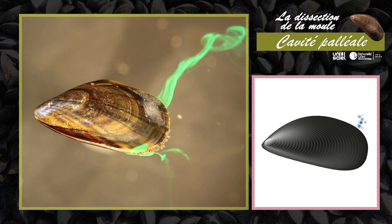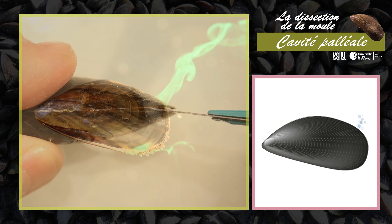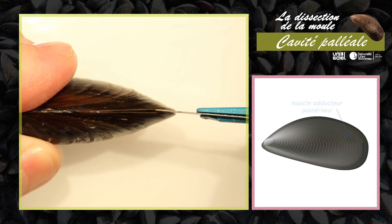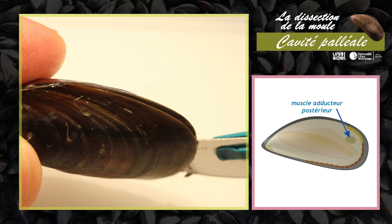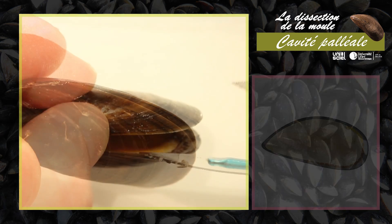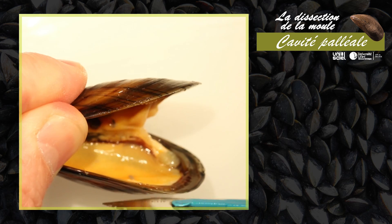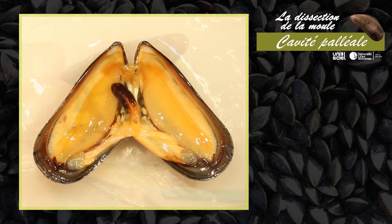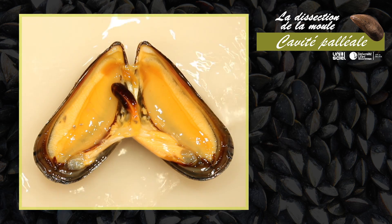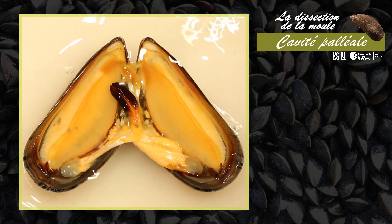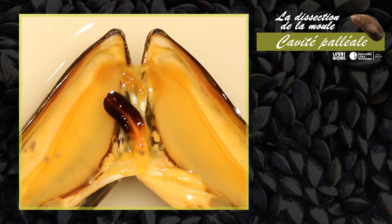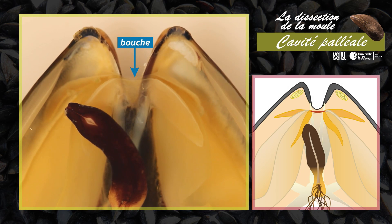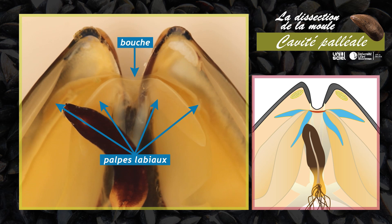Pour observer les organes qui baignent dans cette cavité, il faut ouvrir la moule. Incisez le muscle adducteur postérieur en passant une lame de scalpel entre les deux valves de la coquille, écartez-les et replacez l'animal dans l'eau de mer. À la différence d'autres mollusques, les bivalves ne possèdent pas de tête. La bouche est située dans la région antérieure de l'animal et est entourée par quatre palpes labiaux.